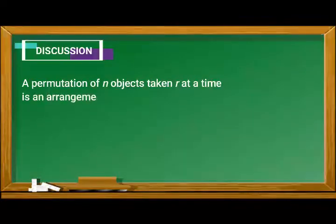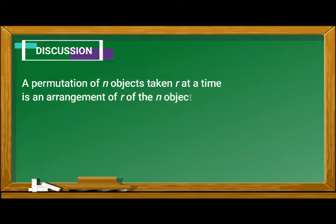A permutation of n objects taken r at a time is an arrangement of r of the n objects in a specific order.